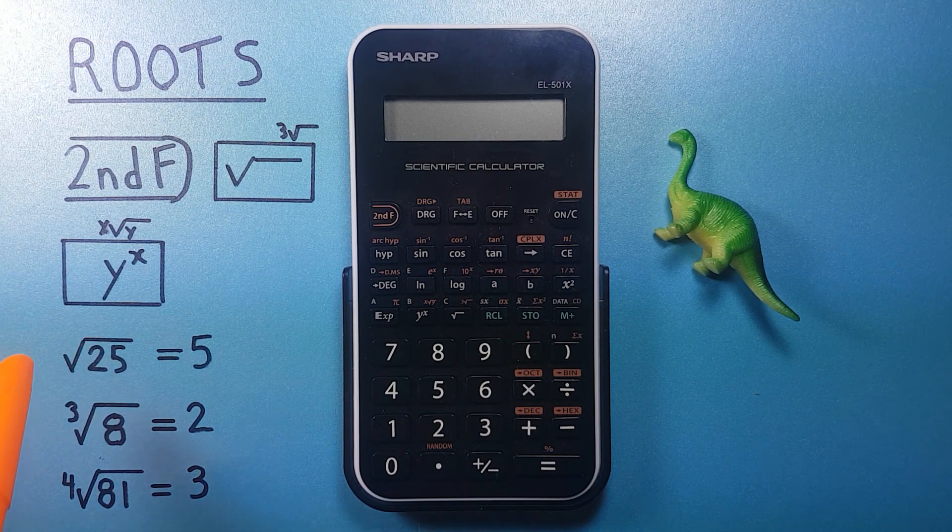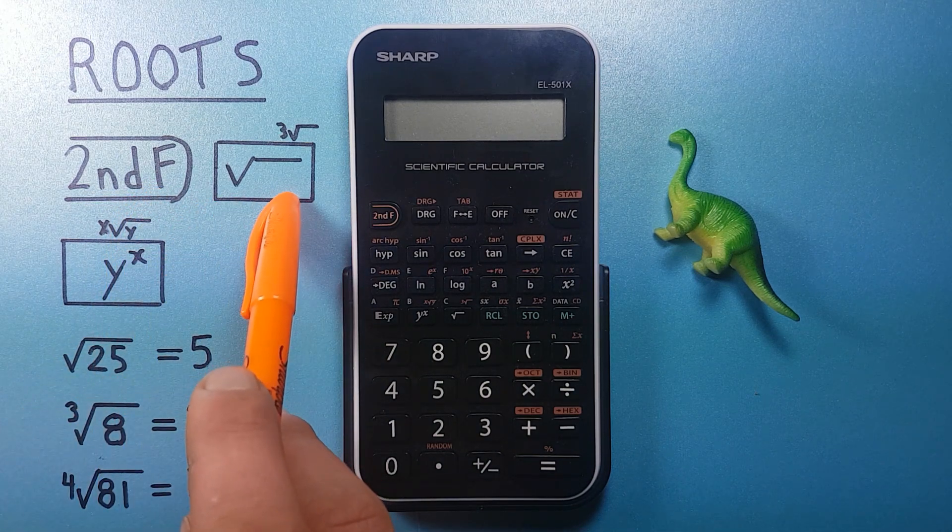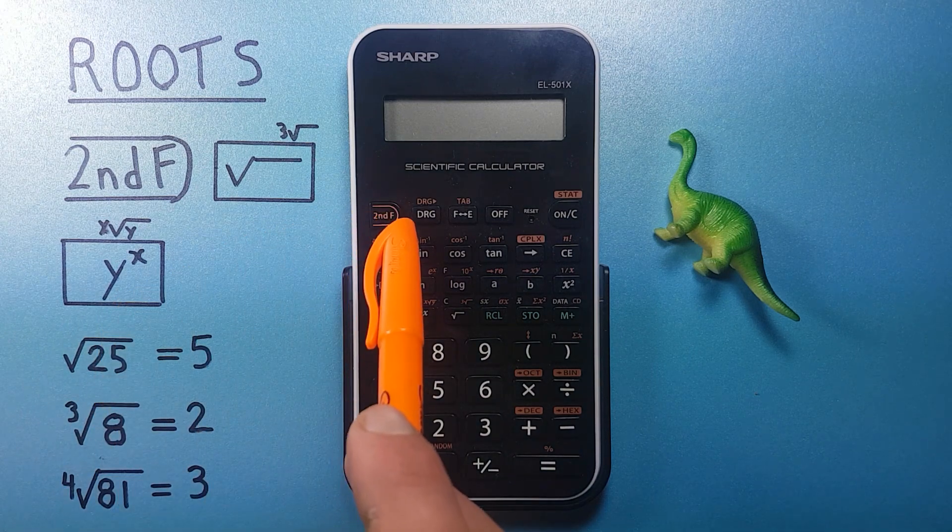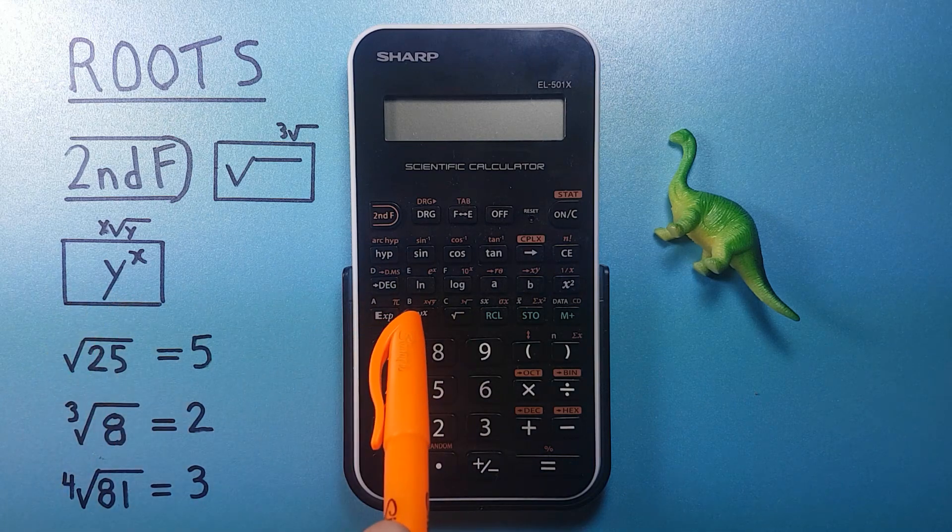To do this we'll be using the second function key, the square root key, and the y to the x key. Second function is here, square root is here, and y to the x is right here.